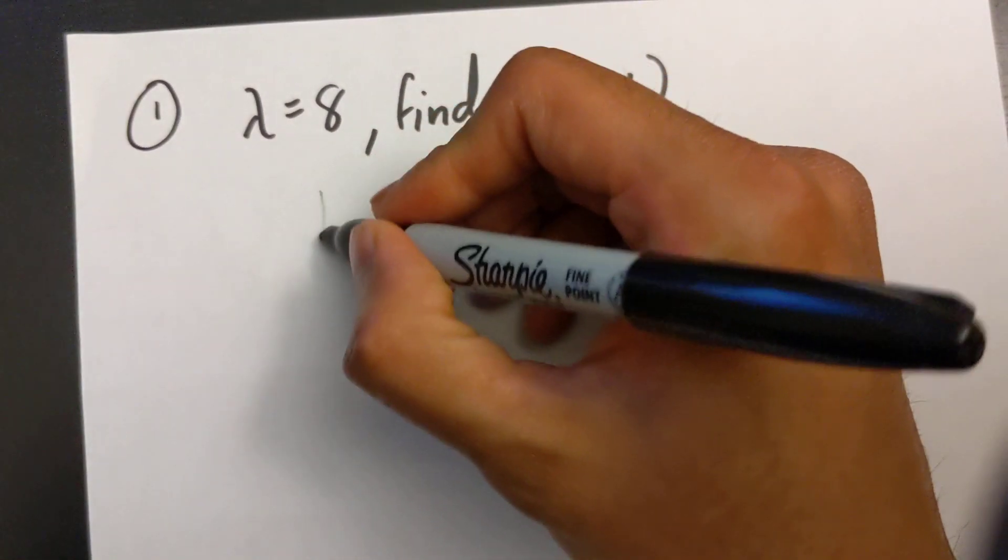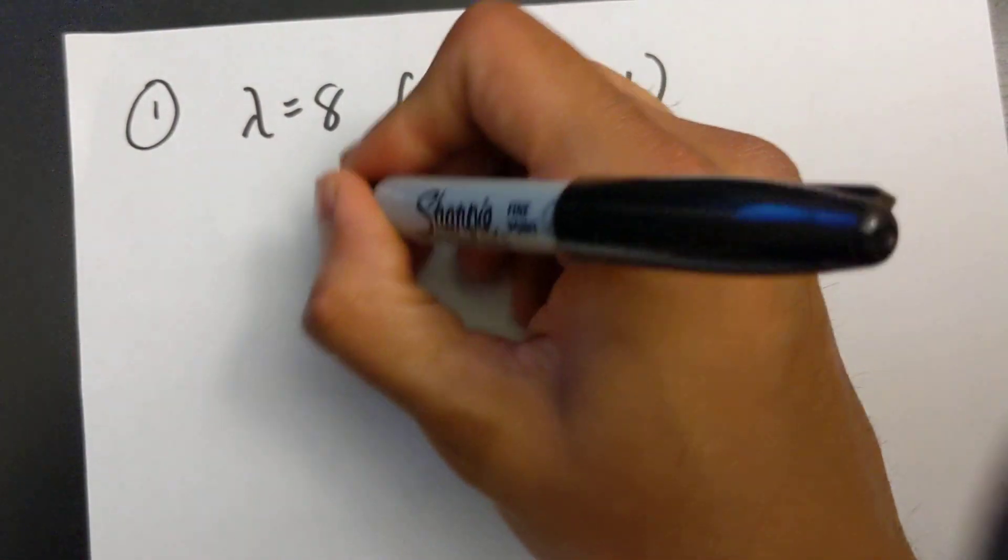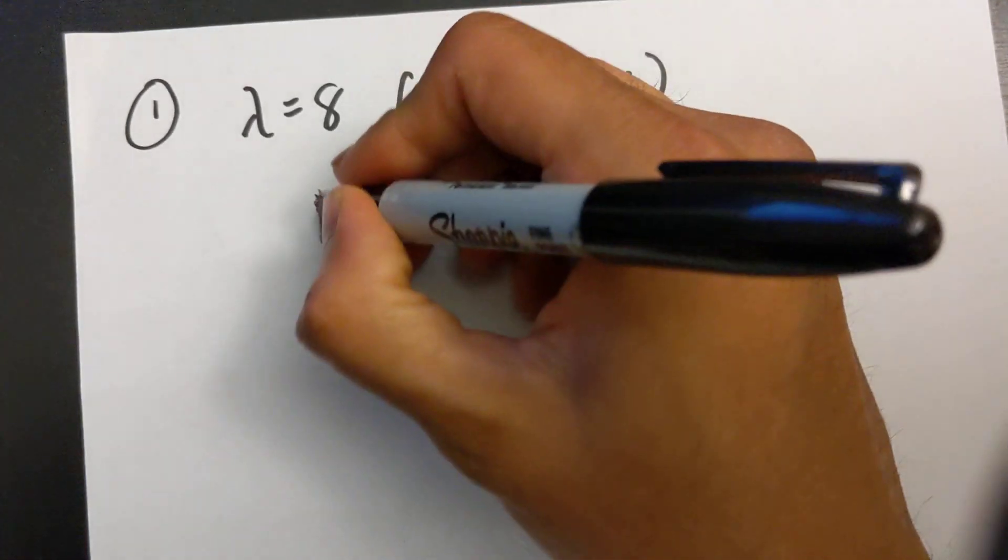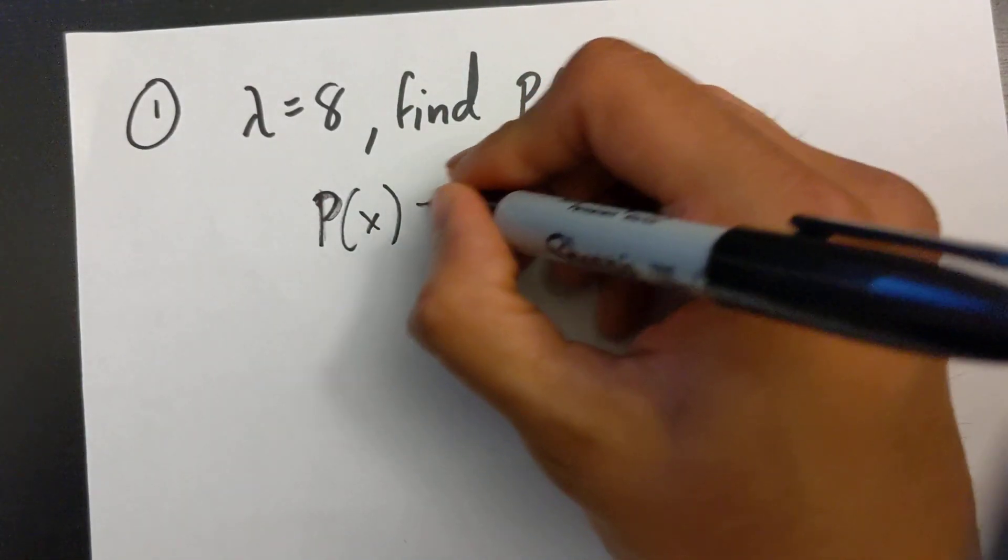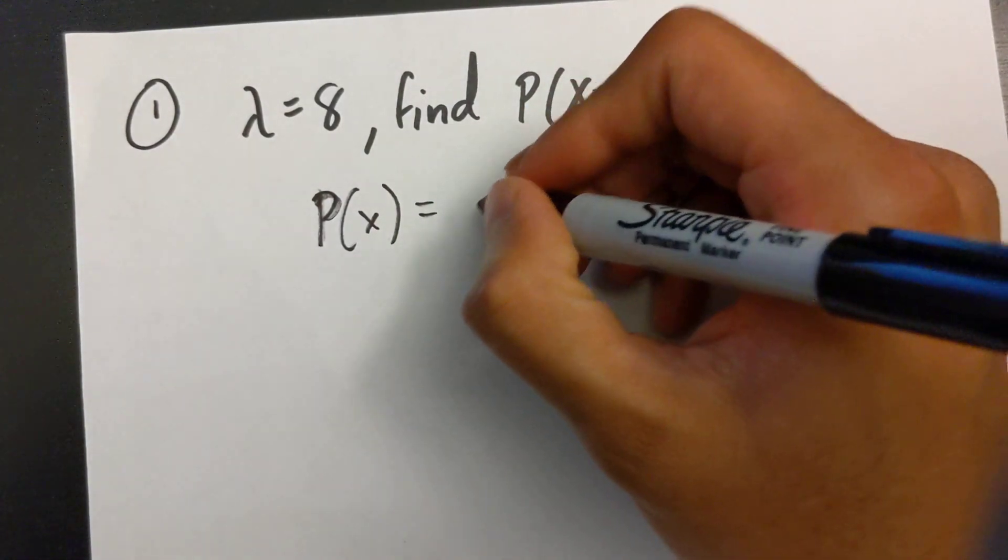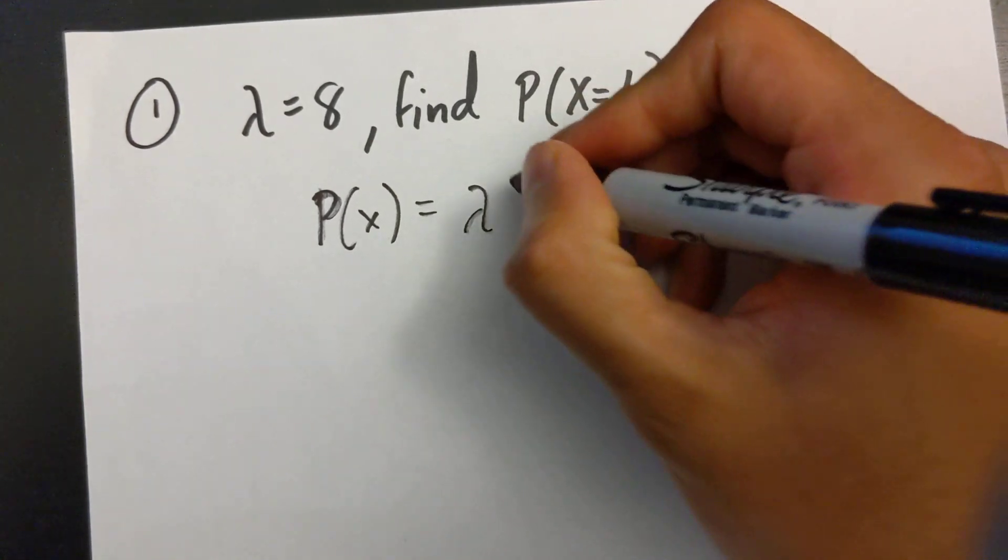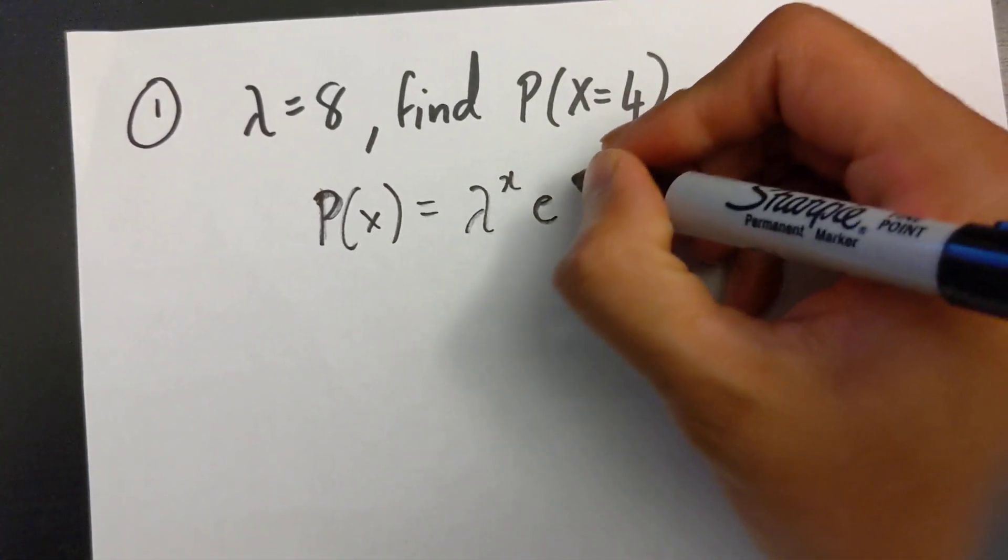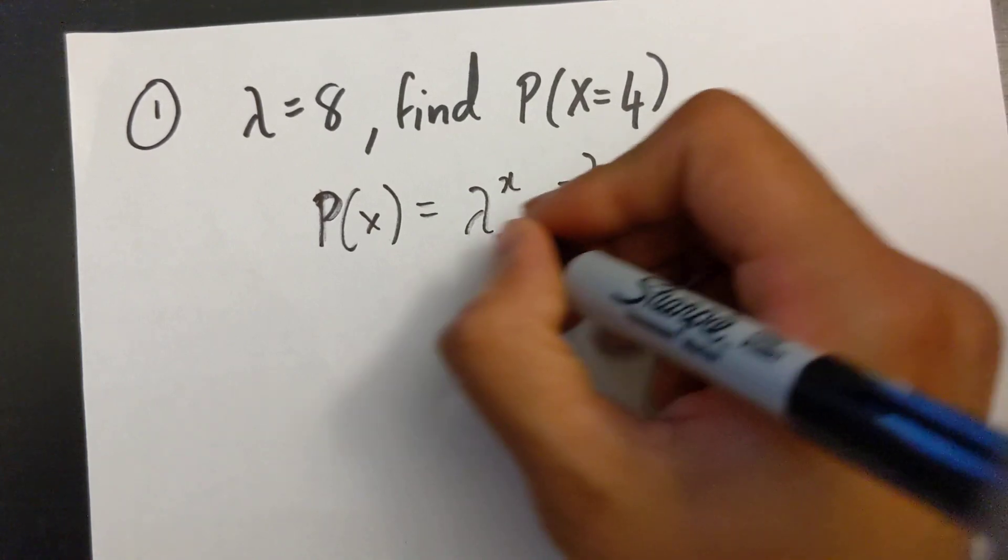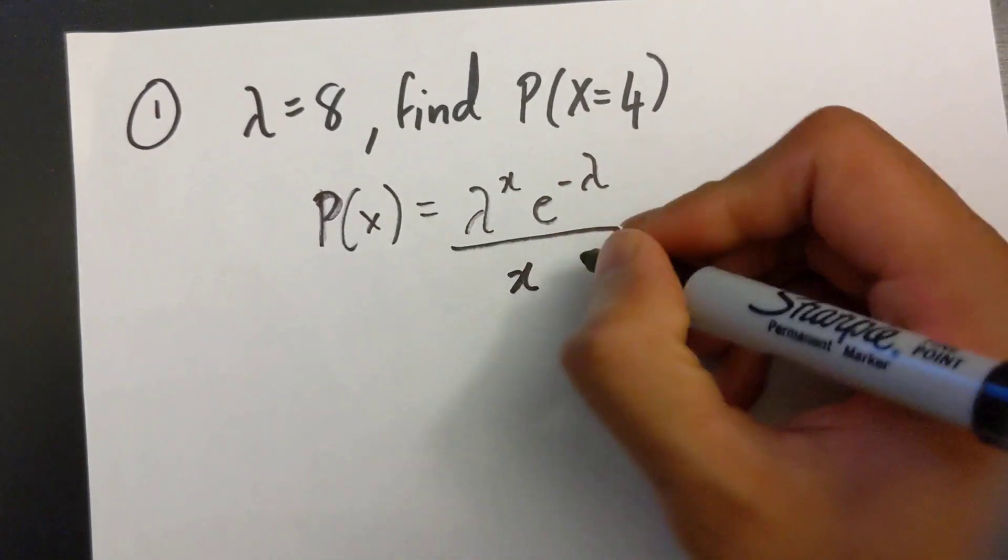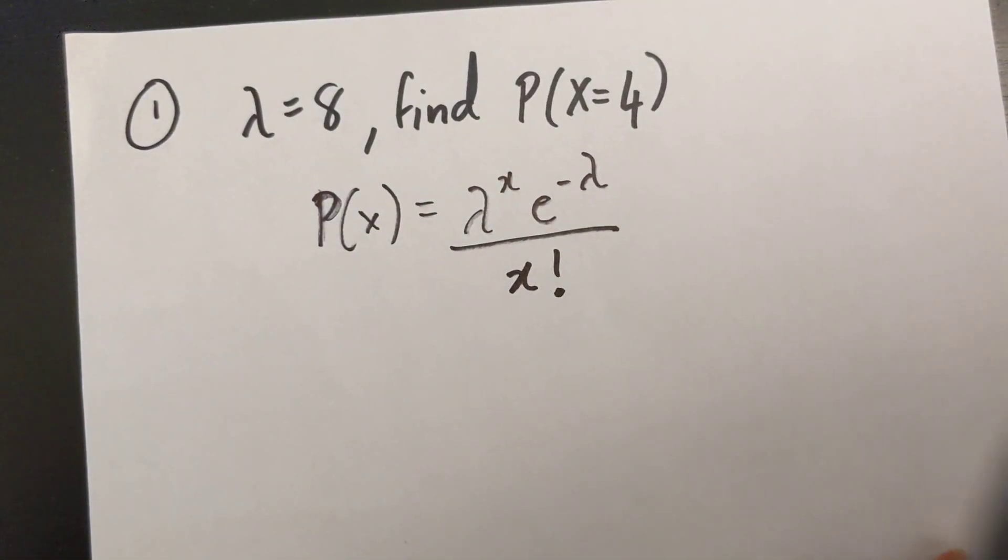So again I'm going to start with my equation. P of x equals lambda to the power of x e to the power of negative lambda over x factorial. That's my Poisson equation.